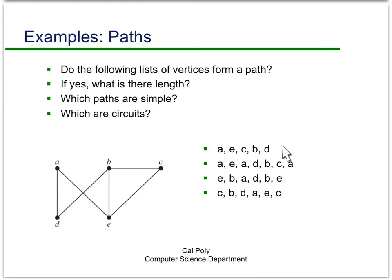Indeed, this first sequence of vertices is a path, and it's a simple path of length 4. You can see that, just trace it out on the screen: A to E, E to C, C to B, and B to D.